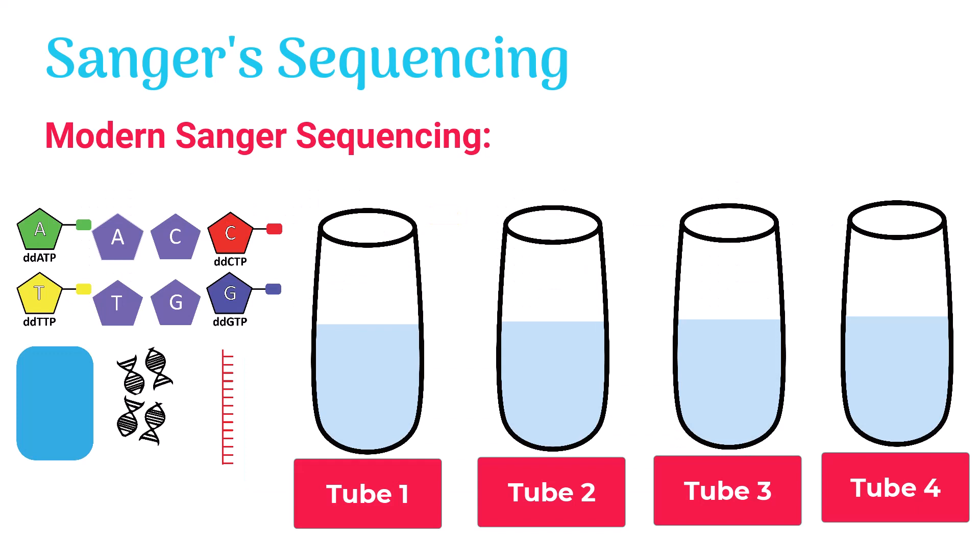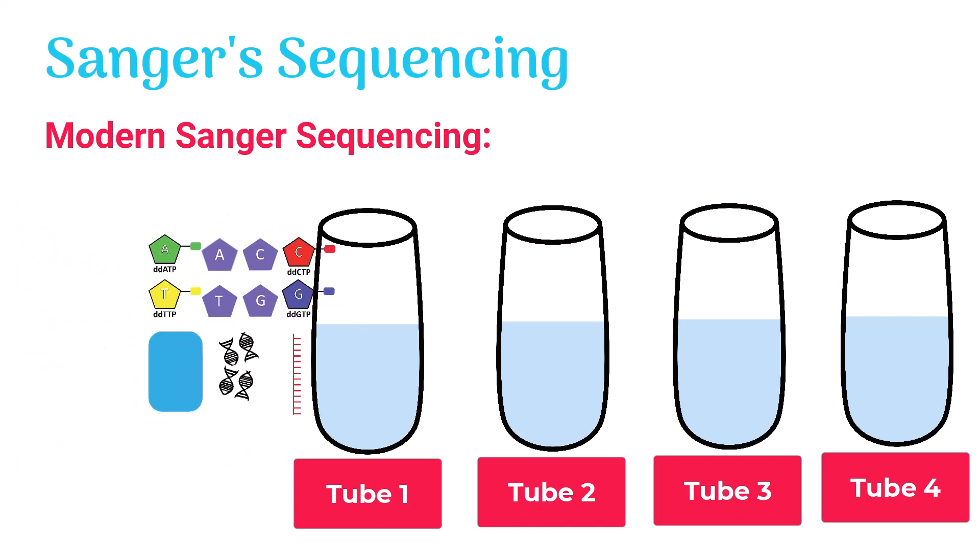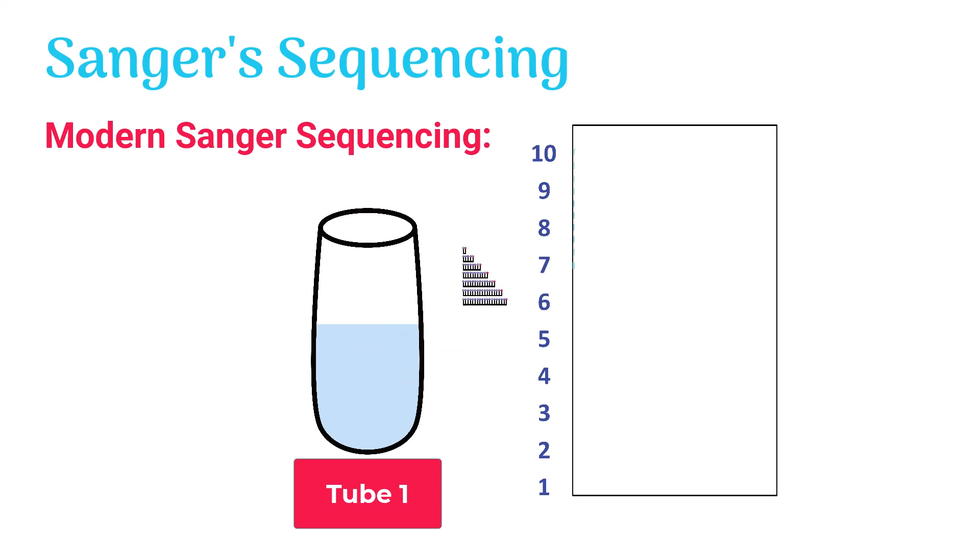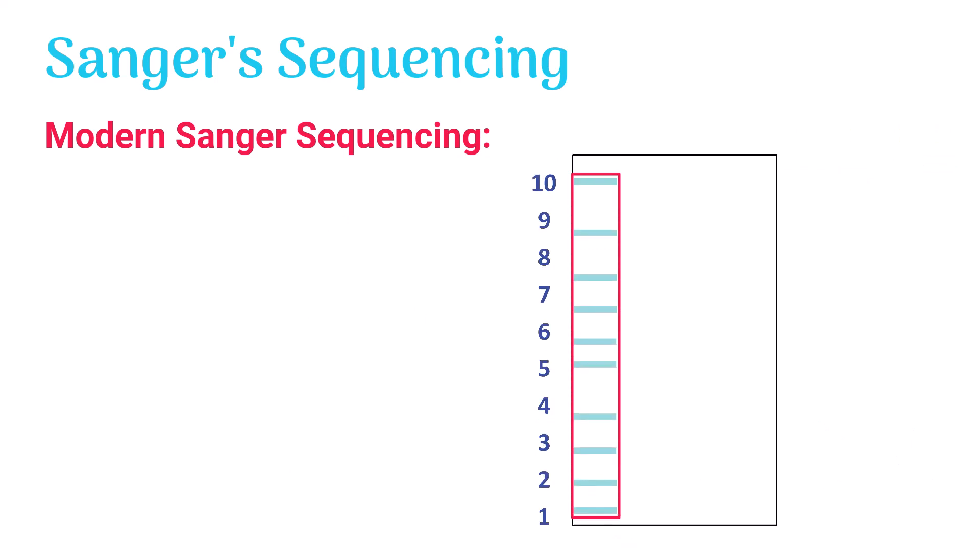This makes it possible to add everything in a single tube and run the reaction in one single tube rather than four. The fragments made in the tube are loaded on gel in a single well rather than multiple wells. The colored bands become visible on the gel under UV light.